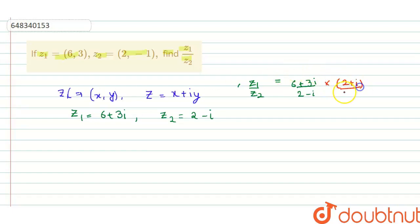So it will be 6 into 2, 12 plus 6 iota, plus 3 iota into 2, 6 iota, and 3 iota into iota is 3 iota square, that is minus 3 upon 2 minus iota multiplied by 2 plus iota. So it will be 2 square minus iota square.